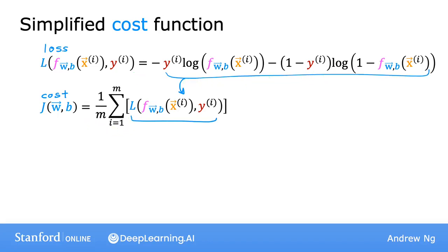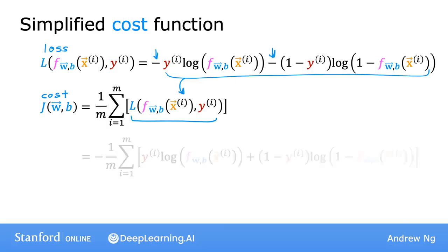That's 1 over m times the sum of this term above. And if you bring the negative signs and move them outside, then you end up with this expression over here. And this is the cost function. The cost function that pretty much everyone uses to train logistic regression.